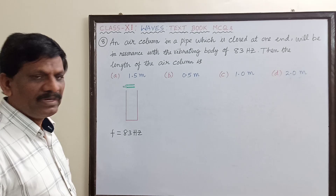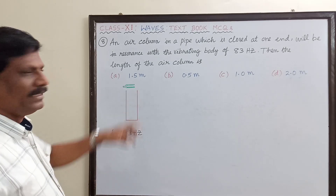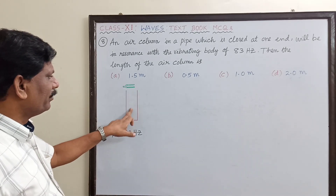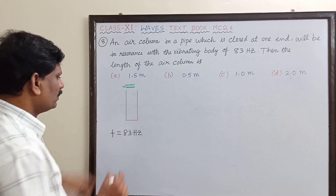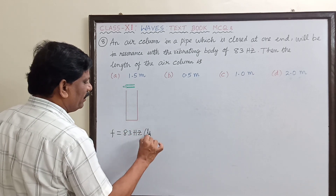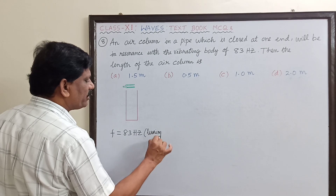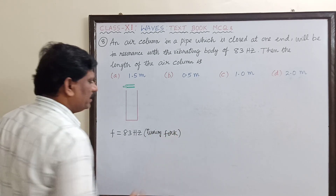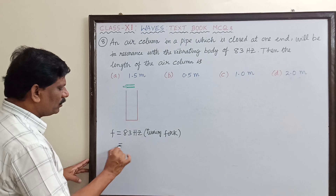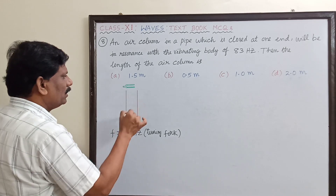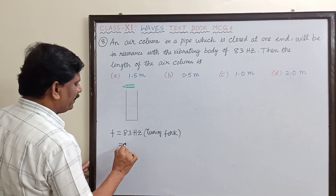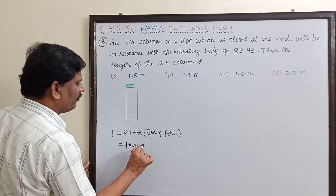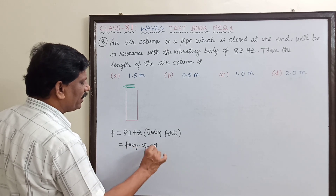The tuning fork is resonating with the air column in a closed pipe. Since they are in resonance, the frequency of the tuning fork is also equal to the frequency of the air column. Let us say it is the fundamental frequency of the air column.